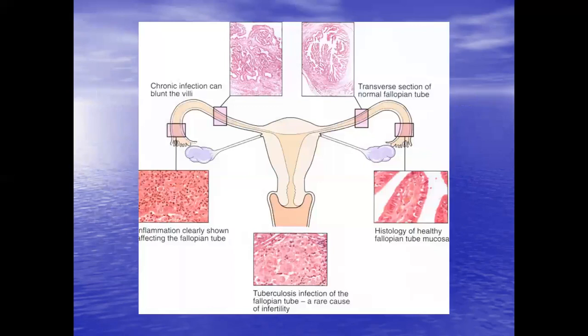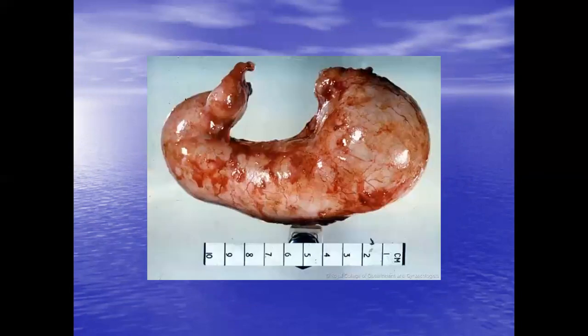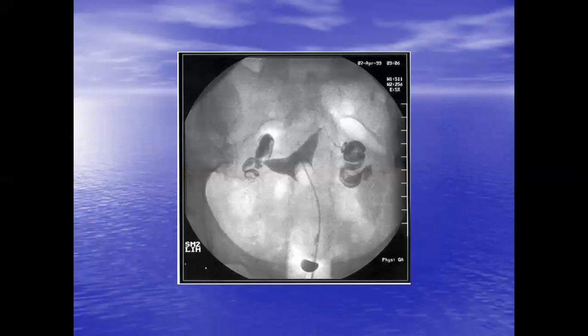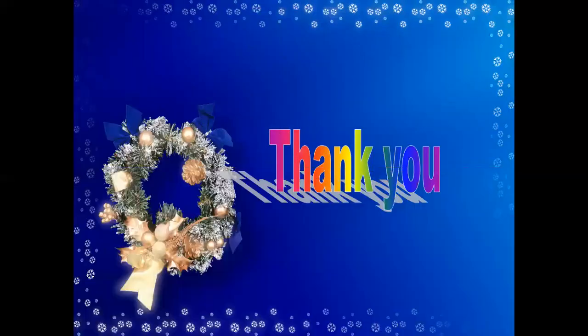This diagram shows the histopathology of infection. Chronic infection can blunt the villi. Inflammation clearly affects the fallopian tube, shown alongside histology of a healthy fallopian tube. The laparoscopic view shows the Fitz-Hugh-Curtis syndrome with adhesions between the liver and anterior abdominal wall. Also shown are types of hydrosalpinx and pyosalpinx, where there is pus inside the tube.